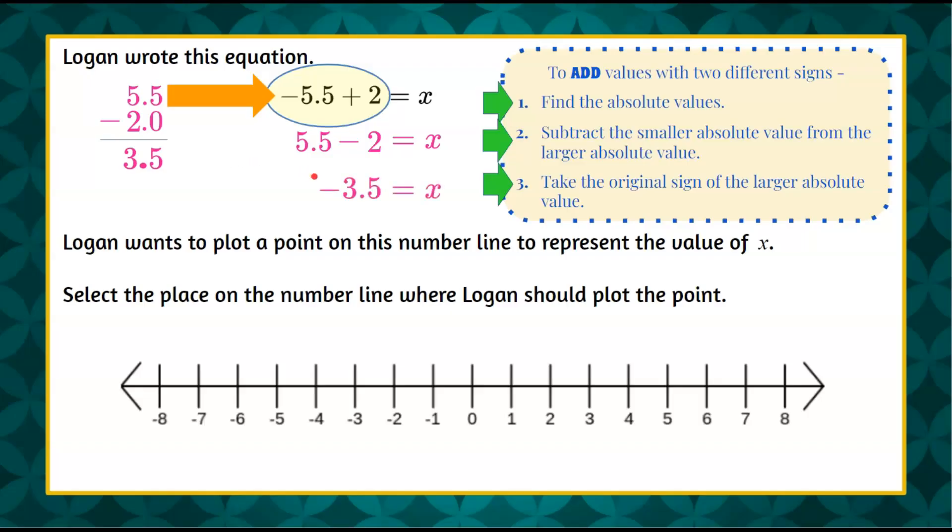Now we need to plot this on our number line. So here's negative 3. Negative 3 and 1 half is between negative 3 and negative 4. So halfway between, we're going to plot a point, and that is our solution, negative 3.5.